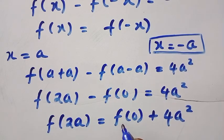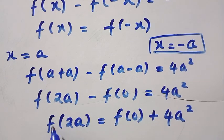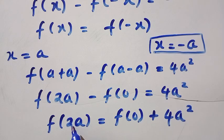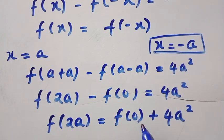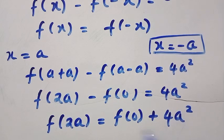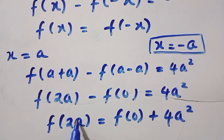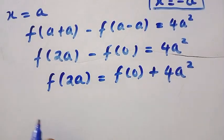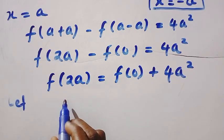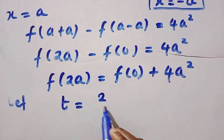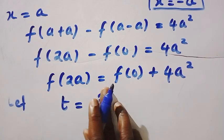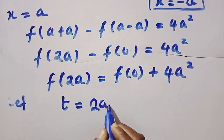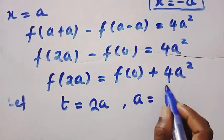Now that we have f of 2a equals f of 0 plus 4a squared, we want to get f of x. Let t equal 2a, so a equals t divided by 2. Substituting, we have f of t equals f of 0 plus 4 times t over 2, all squared.